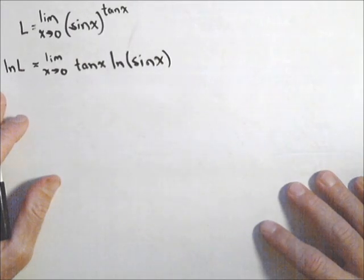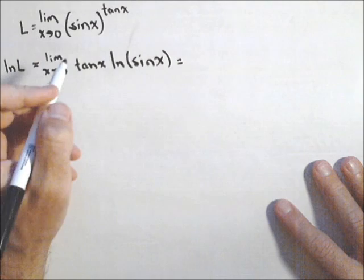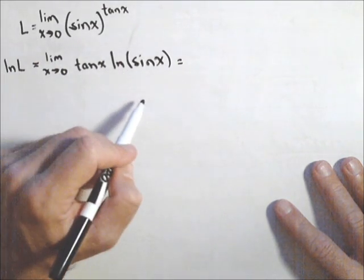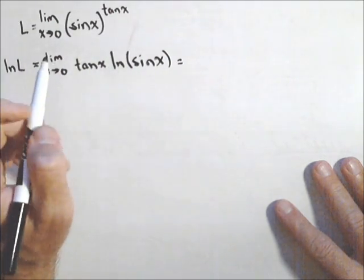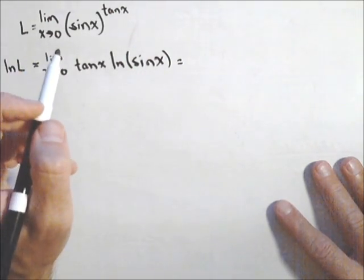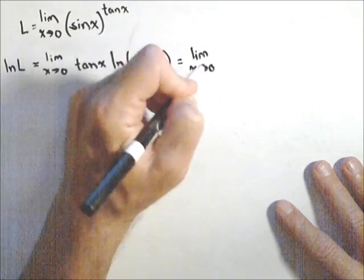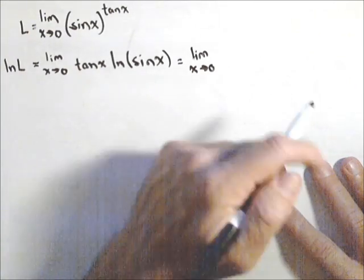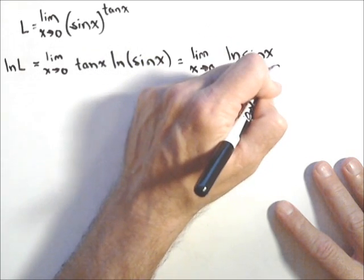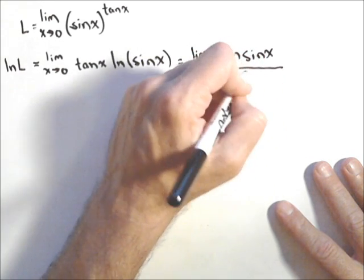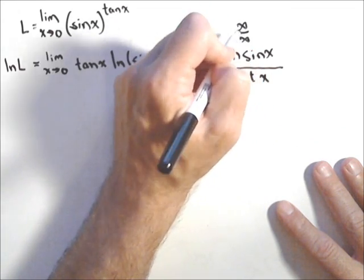And as we've seen in the past, those can be turned into our version of L'Hopital's rule. So what we're gonna do is put one over tangent x in the denominator. So limit as x goes to zero, and we're gonna rewrite this as ln of sine x all over cotangent x. And there's now our infinity over infinity case.